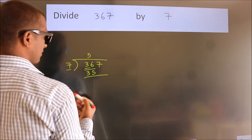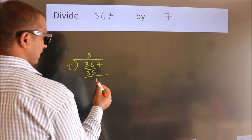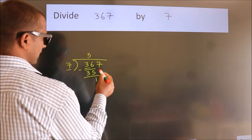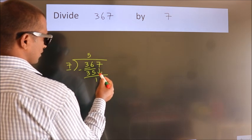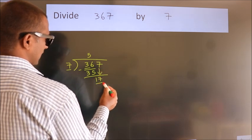Now we should subtract. We get 1. After this, bring down the beside number, so 7 down, giving us 17.